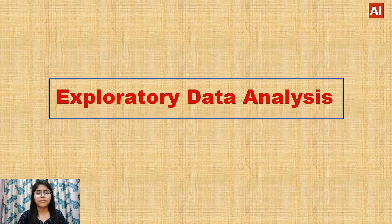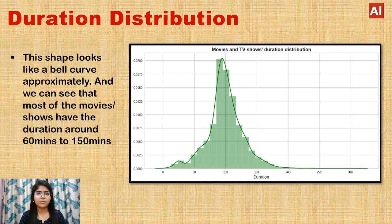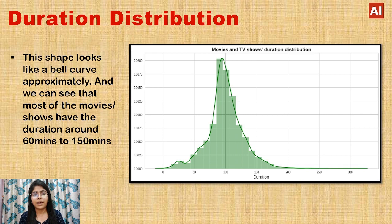Now let's discuss the exploratory data analysis. First, looking at the duration distribution, we can see an approximately normalized distribution resembling a bell curve. Most movies and shows have a duration of around 60 to 150 minutes.